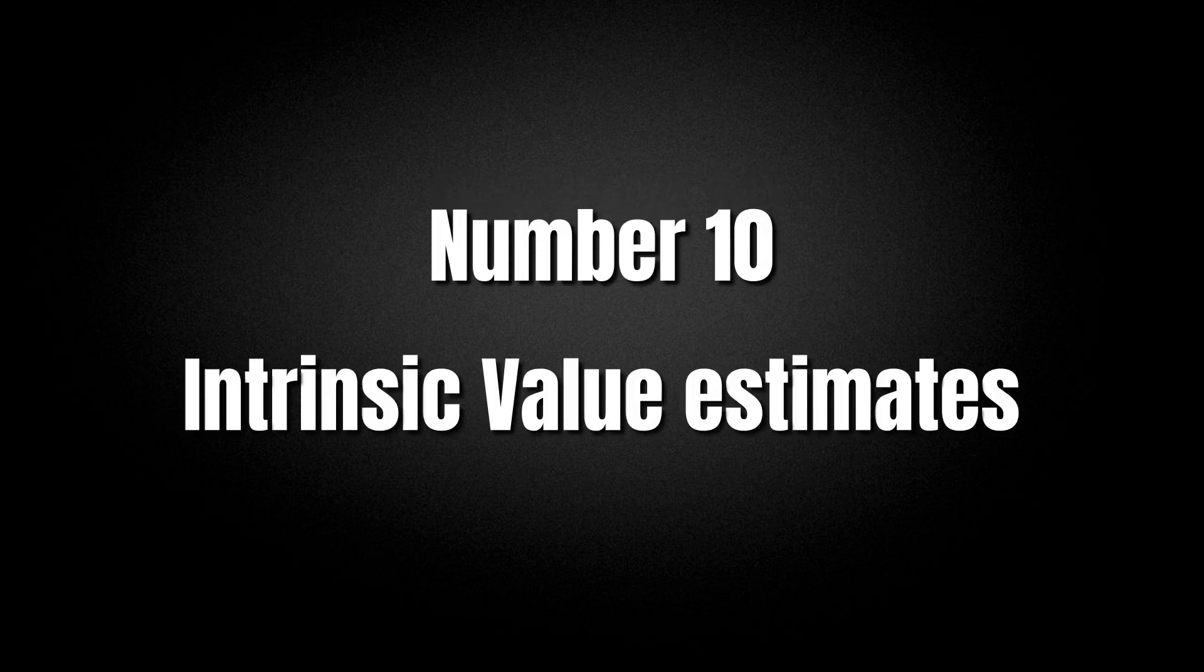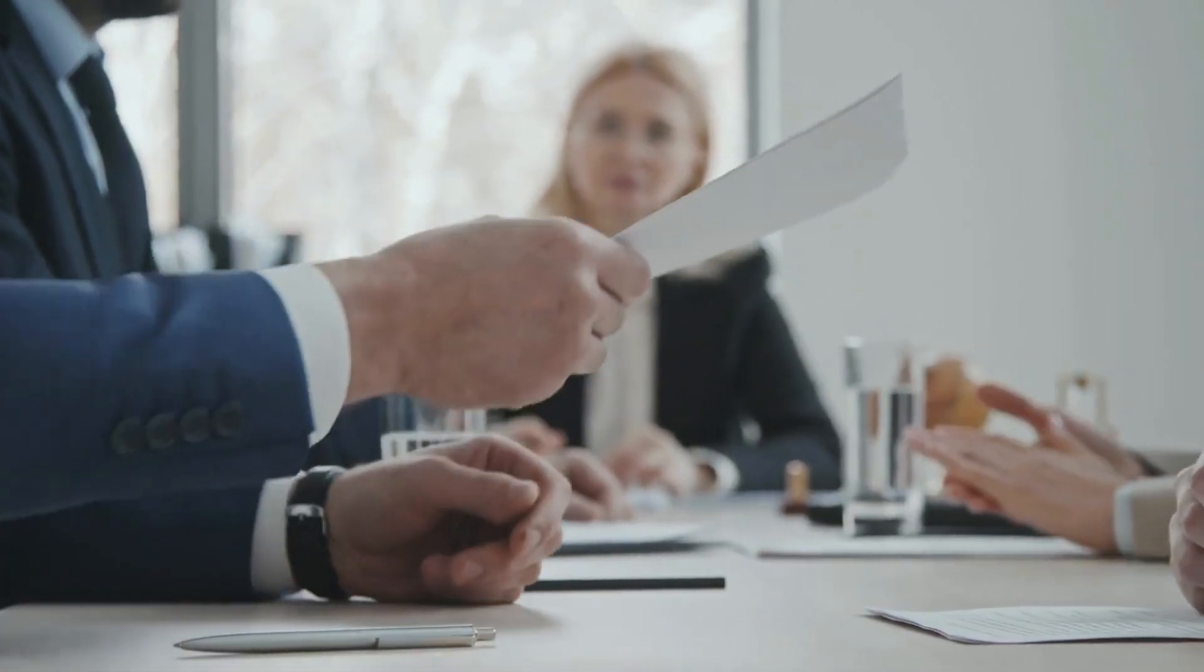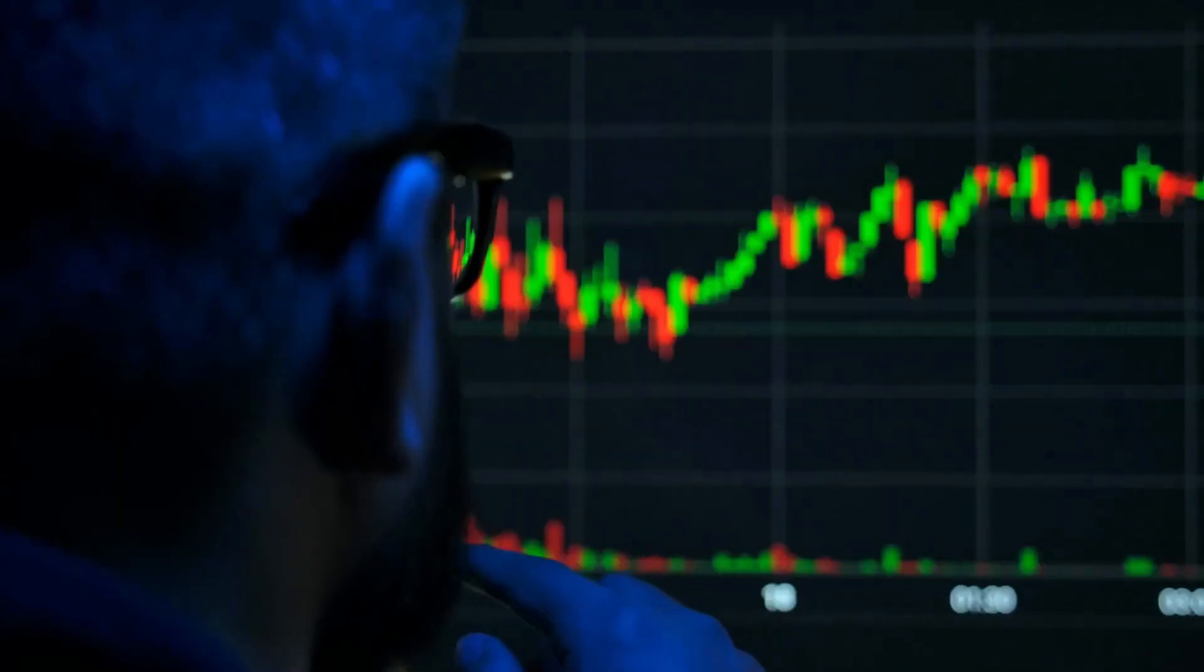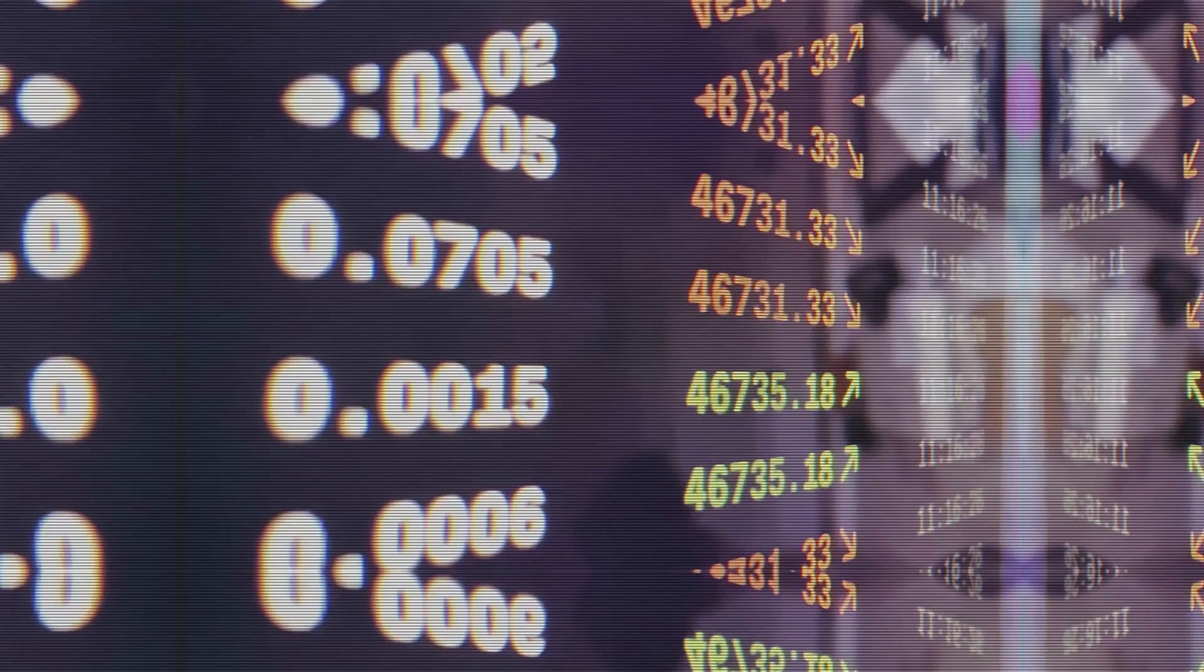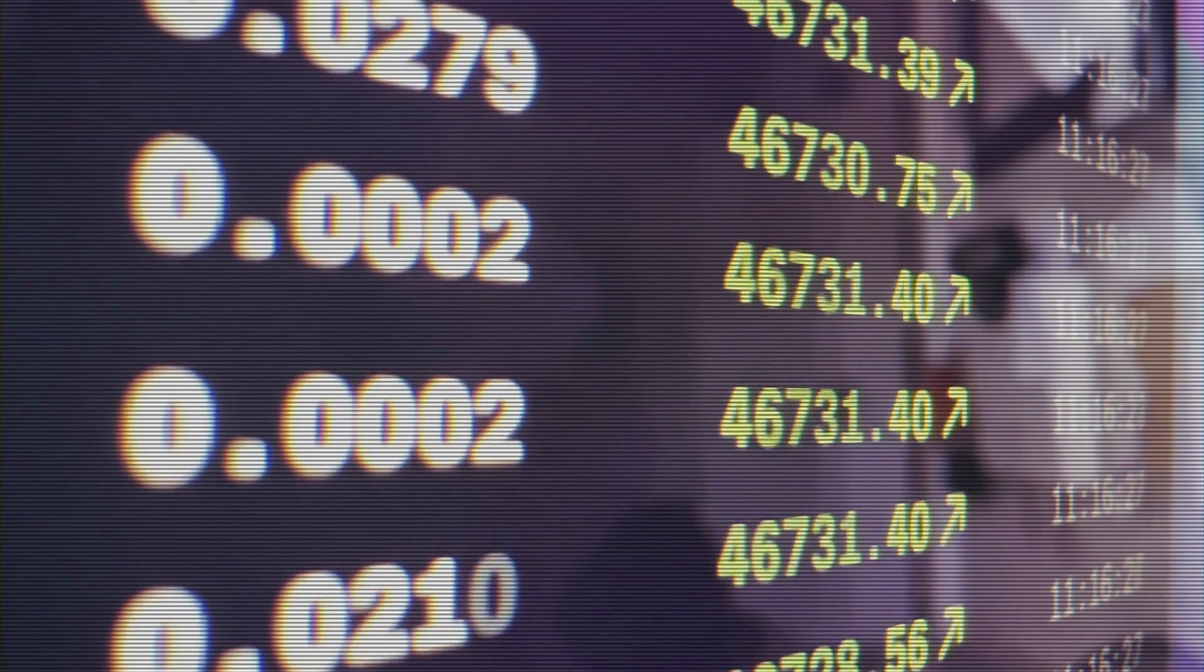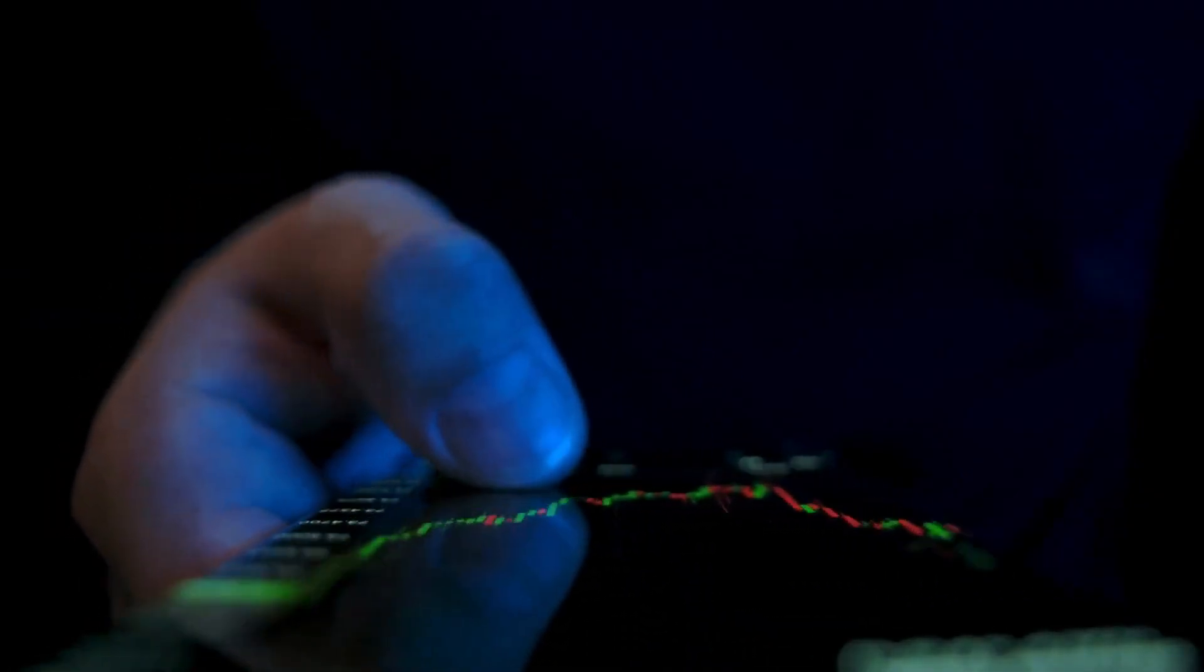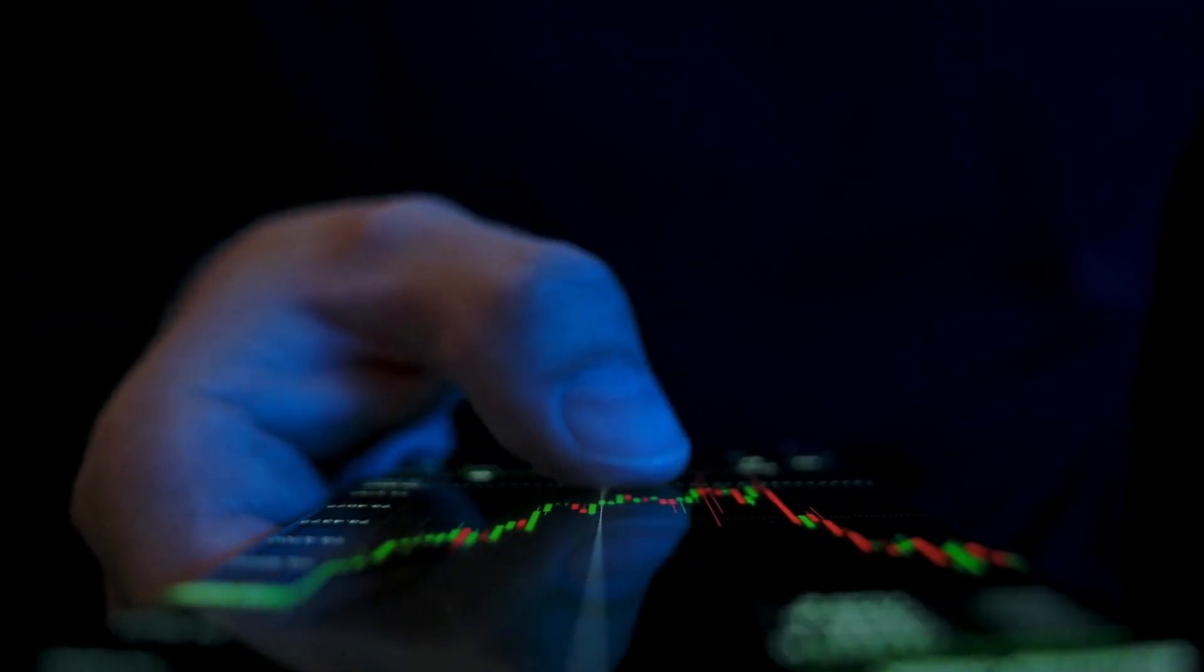Number 10. Intrinsic value estimates. As one of the most prominent value investors out there, Buffett naturally places a big importance on the intrinsic value of a business. For him, this is one of the most important metrics that make or break a stock. It's all about buying low and selling high. You're trying to buy undervalued businesses and to only sell when they happen to be overvalued.